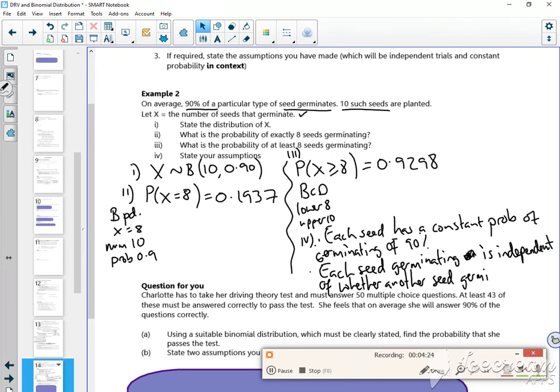You've got to be really, really careful how you write that, or you end up saying the probability of a seed germinating is independent. And you kind of club them both together by mistake. So I've got each seed has a constant probability of germinating of 90%. Each seed germinating is independent of whether another seed germinates.